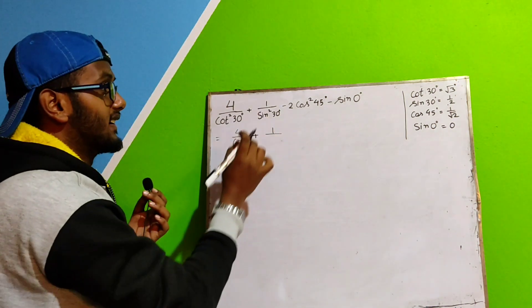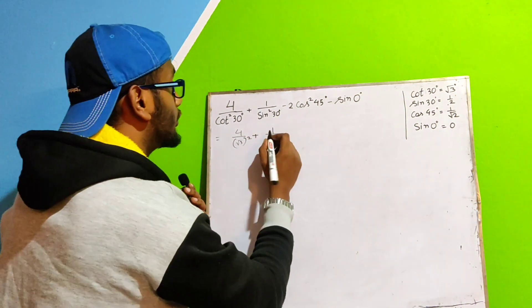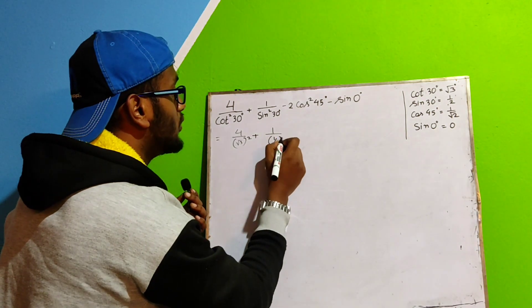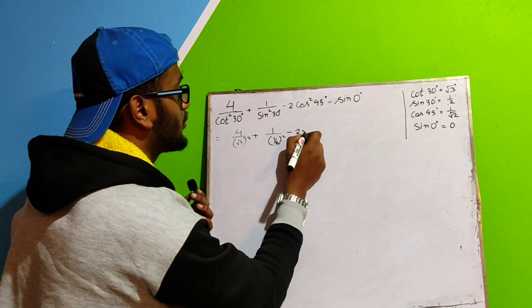What is sin 30°? Sin 30° is equal to half. So 1 by 1 by 2 whole square minus 2.